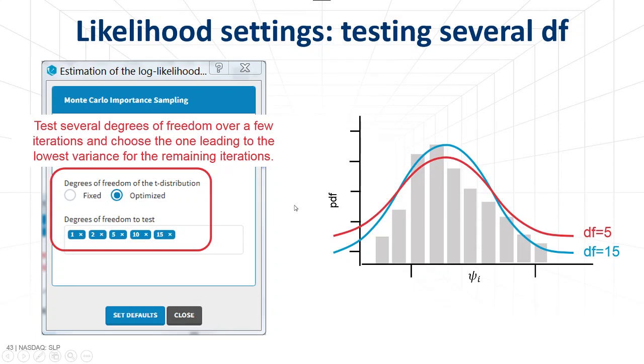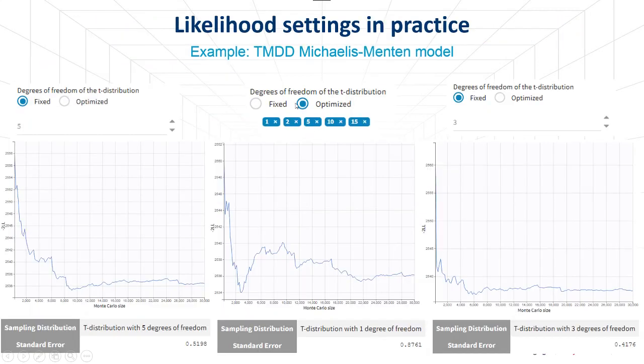Let's see the impact of these settings on a concrete example. I here have taken an example of a target-mediated drug disposition model. On the left, we can see the convergence of the likelihood with the default settings. It looks quite okay. In the middle, I have set it as optimized, and the algorithm has selected 1 as degrees of freedom, but the result is not really more stable. And on the right, I have set it myself as fixed to 3, and it is slightly better. One can see on the right that the likelihood is stabilizing a bit faster than what we see here or here. Now you have all the information to understand what the likelihood task does. Have a nice week!